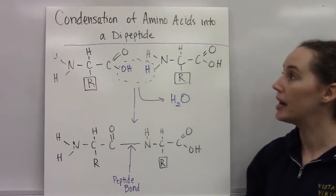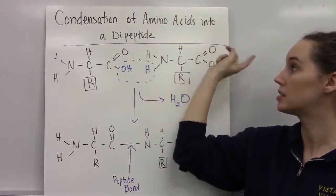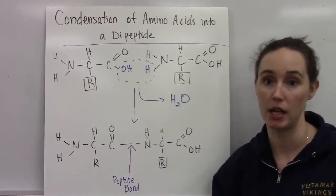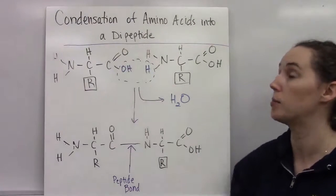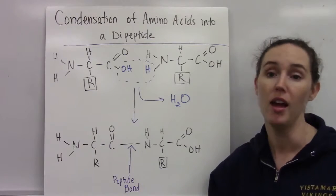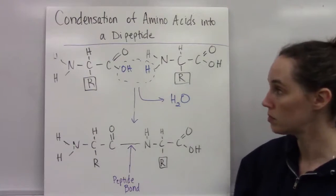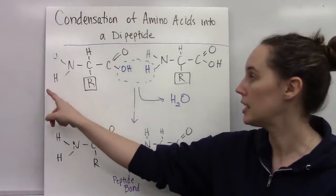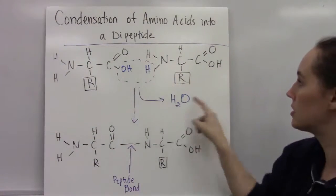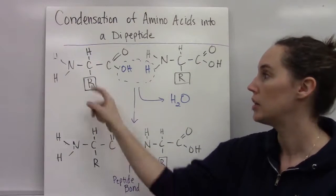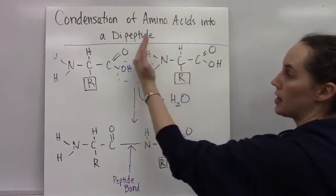All right, here are some examples. An example of a condensation reaction would be bringing two amino acids together to form a dipeptide. A dipeptide is a chain of two amino acids linked together by a peptide bond. A peptide bond is just the name of a bond that links two amino acids together. So you can see here, this is one amino acid, and this is the second one. You have your amino group, your alpha carbon with the side chain, and then the carboxylic acid group.